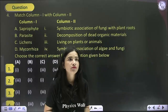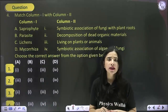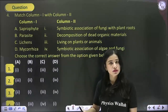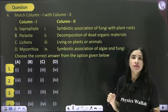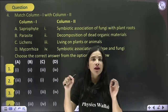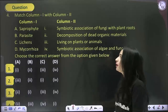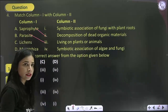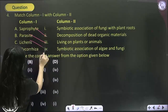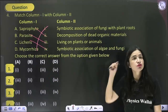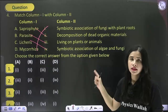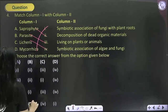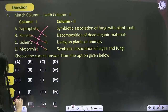The next question: match column one with two. Saprophytes like fungi feed on dead and decaying organic matter. Parasites live on the body of another organism, inside or outside, extracting the host's food and nutrition. Lichens and mycorrhiza are both mutualistic associations — of algae and fungi, and fungi with roots of higher plants respectively. Match: A with 2 (decomposition of dead organic matter), B with 3 (living on plants or animals), C with 4 (symbiotic association of algae and fungi), D with 1 (symbiotic association of fungi with roots of higher plants). Answer becomes option 4.